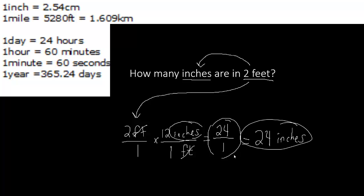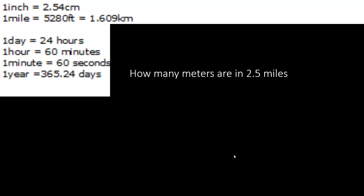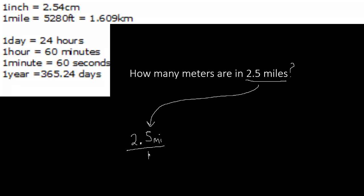That's a relatively simple problem — you might have been able to do that in your head. However, here's one that's not so simple. Let's say we want to know how many meters are in 2.5 miles. We identify what we have: we are given 2.5 miles. So we go ahead and stick that over 1 — 2.5 MI over 1. Next, we identify what we're trying to do: we are trying to convert 2.5 miles into meters, so our ending unit must be meters.